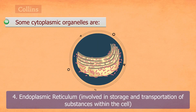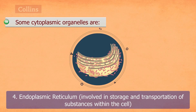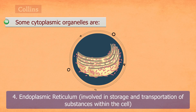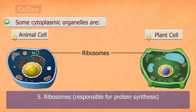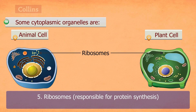Endoplasmic reticulum. This is a network of tubules which are involved in storage and transportation of substances within the cell. Ribosomes are small granular structures scattered in the cytoplasm and are responsible for protein synthesis.